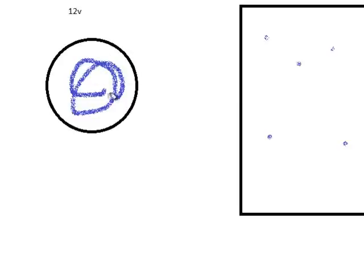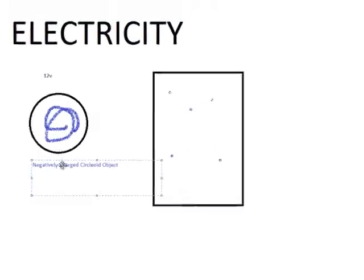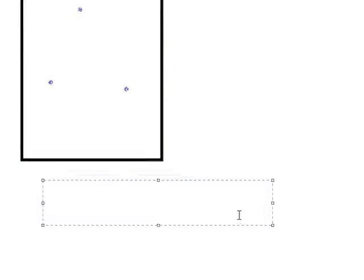So there are more electrons on this side and there are fewer on this side, which means that this side on the left here is negatively charged and the right side here is positively charged.